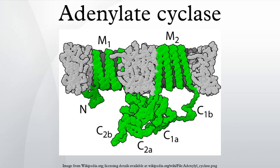Adenylate cyclase is an enzyme with key regulatory roles in essentially all cells. It is the most polyphyletic known enzyme; six distinct classes have been described, all catalyzing the same reaction but representing unrelated gene families with no known sequence or structural homology.